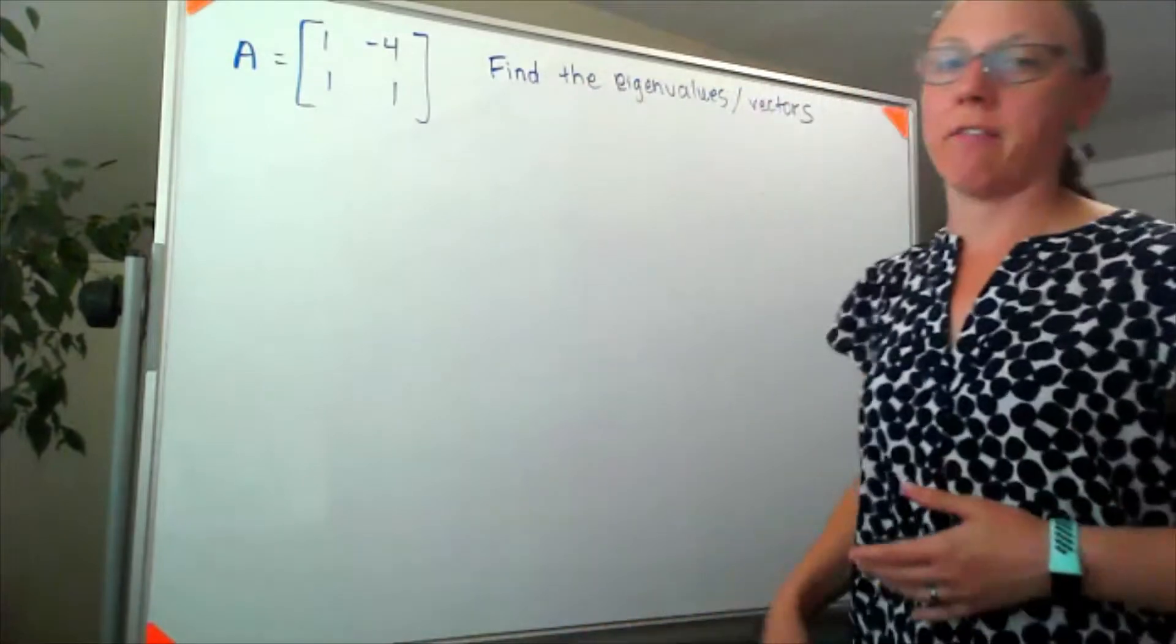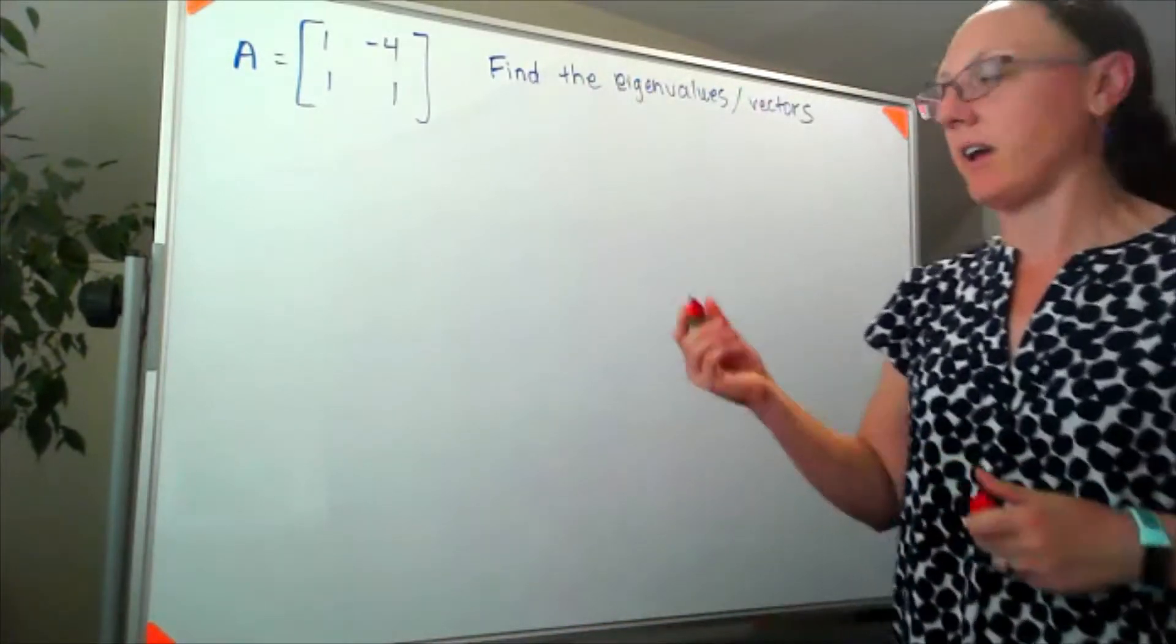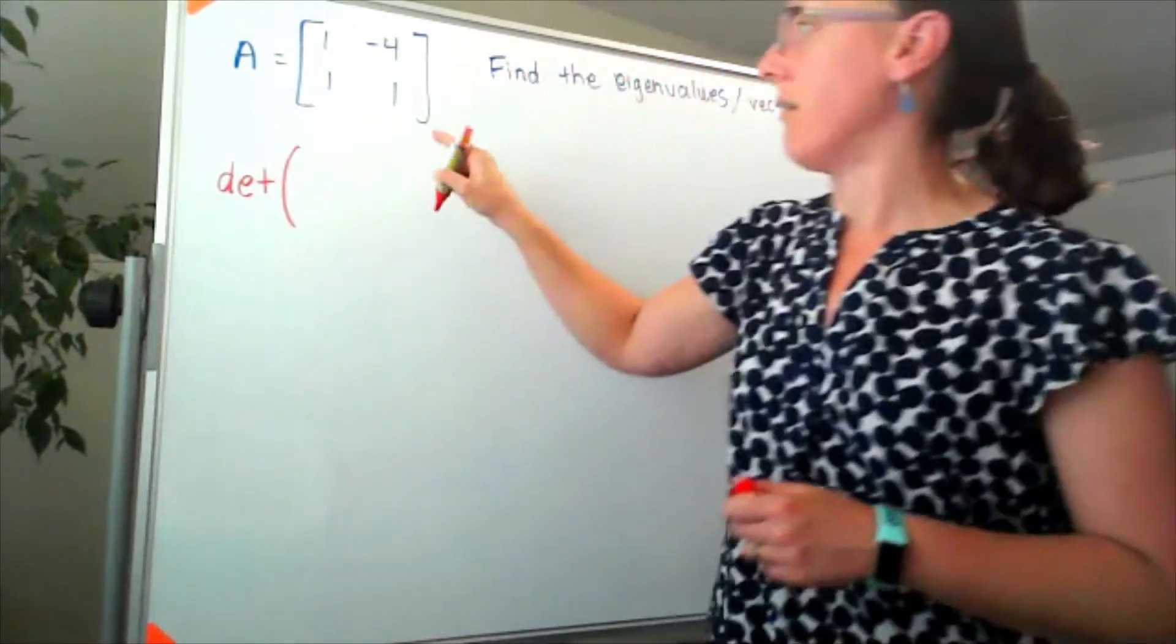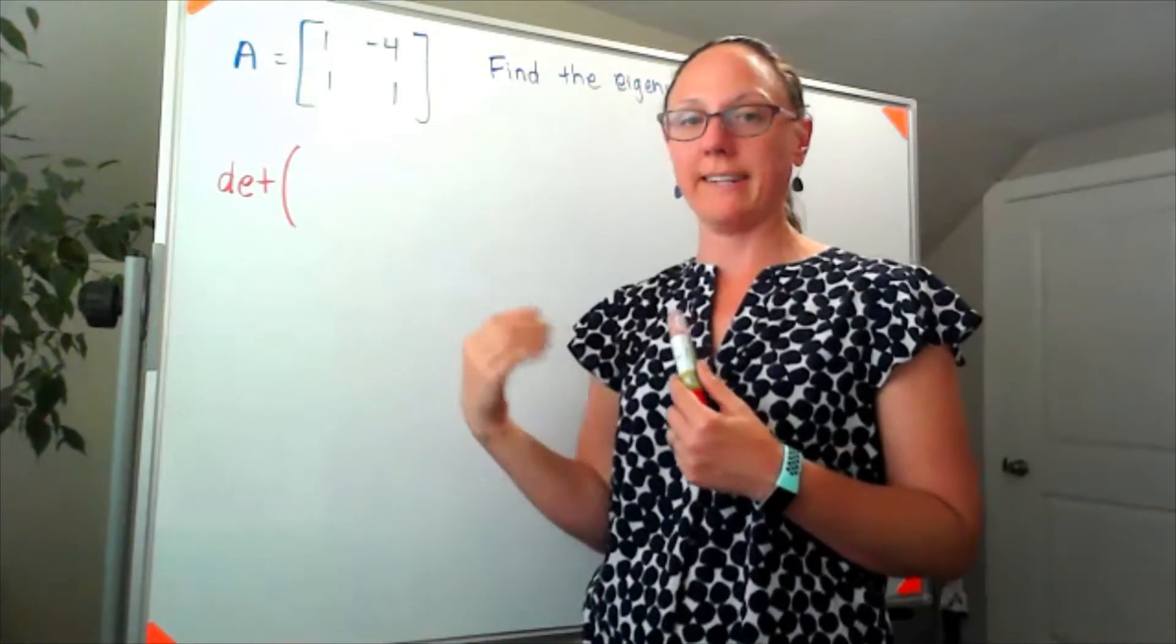So anytime I'm asked to find the eigenvalues, I'm thinking back to determinant of A minus lambda I. So I'm looking for the determinant of when we subtract off that lambda I, it means we're subtracting lambda from the primary diagonal.